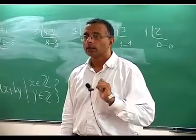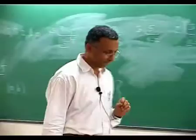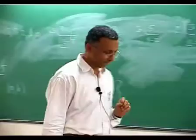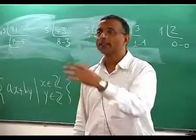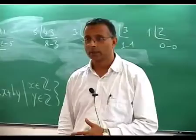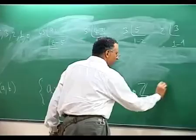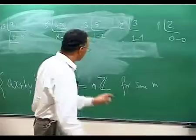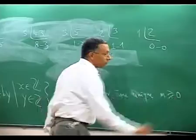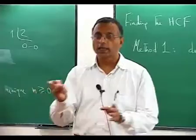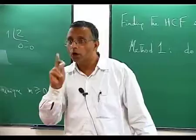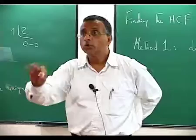What do we know about ideals in the integers? An ideal must be of the form nZ — multiples of a given number, like 2Z, 3Z, 4Z, etc. So the set {Ax + By} equals mZ for some unique m ≥ 0. What is the relation between m and the HCF? They are equal — this m is nothing but the HCF of A and B.